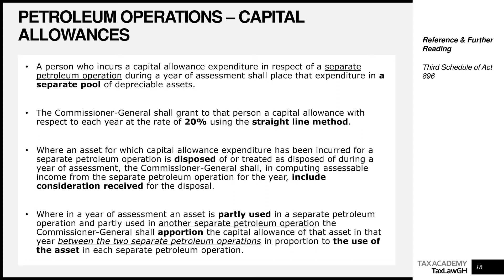Petroleum operations rules for capital allowances are very similar to minerals and mining operations, but the treatment of disposal is one area where there's a big difference. Almost everything else is the same — they both have a 20% straight line rate and you put everything in one pool. Remember: for a petroleum operations business, when there is an asset disposal during the year, you include the consideration received for the disposal.